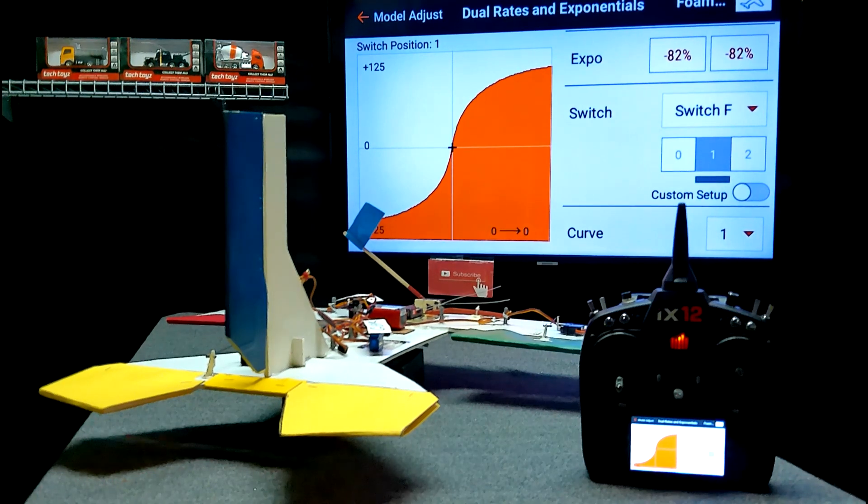So a positive Expo setting softens the stick. A negative Expo setting speeds up the stick.